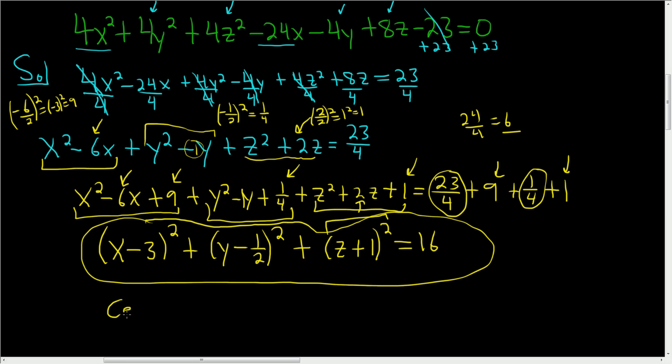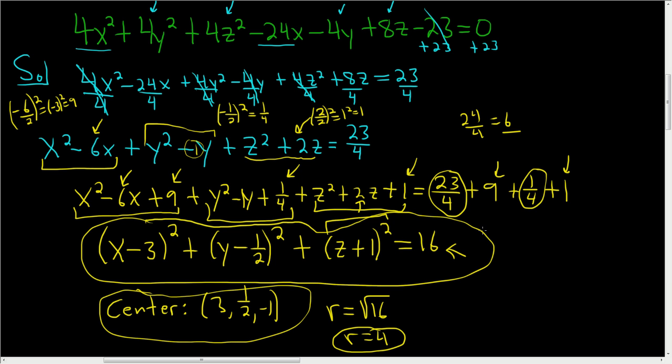The center, you just switch the signs. So 3, 1 half, negative 1. And the radius is just the square root of this number here. So square root of 16, so the radius is equal to 4. So there's the radius, there's the center, and this is the standard form. I hope this helps.